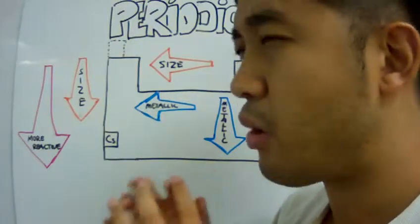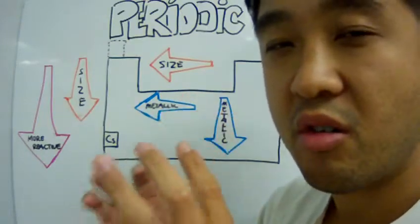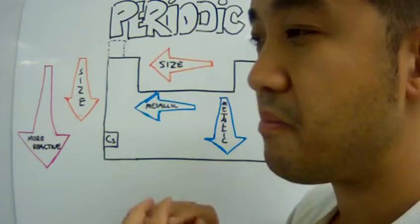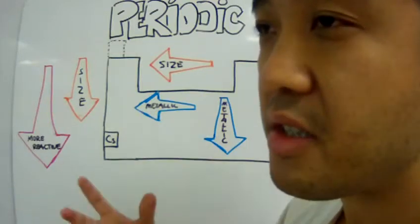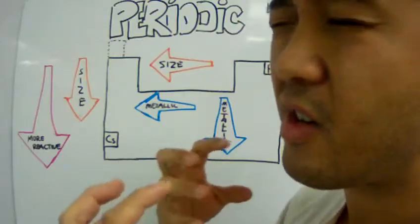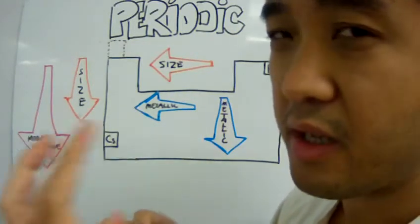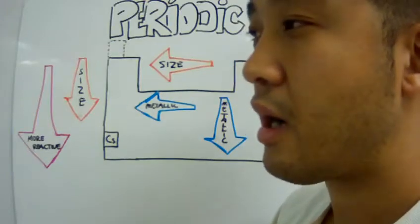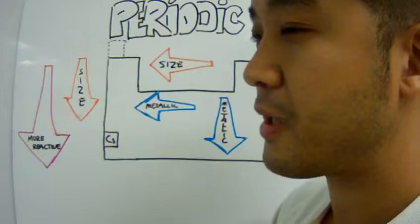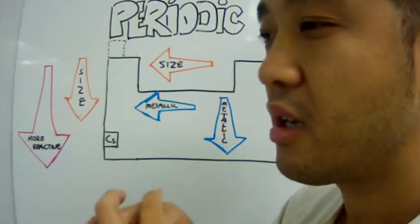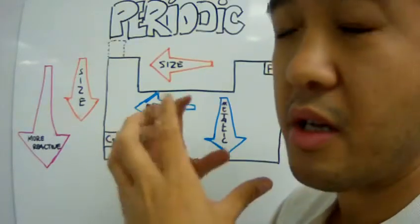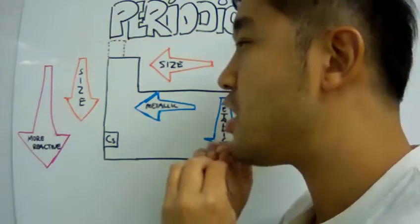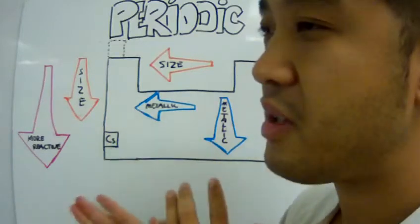It is important to note that these are just broad generalizations, because as you go along the periodic table from left to right or up and down, you will see exceptions to these trends. This is because of the way electrons interact with themselves or other species, and the geometric shape of the element and its compounds. We will simply generalize in terms of size, reactivity, and metallic character.